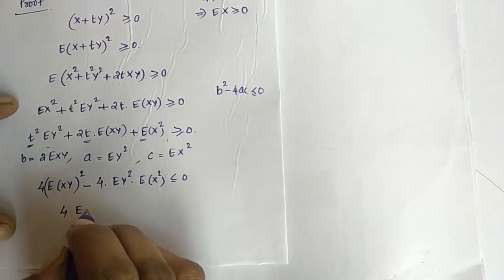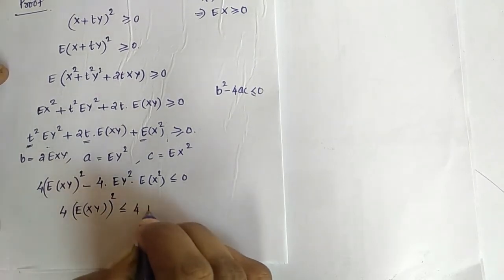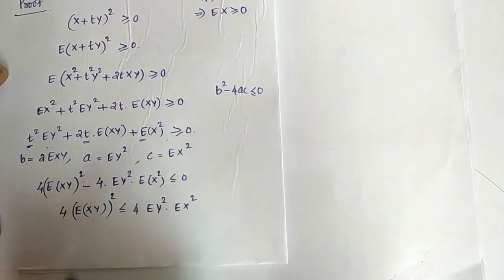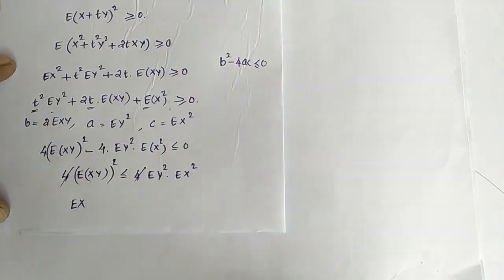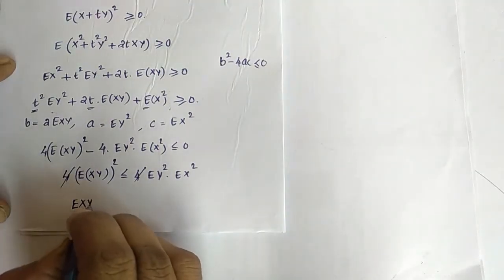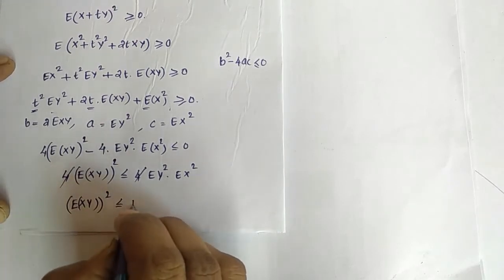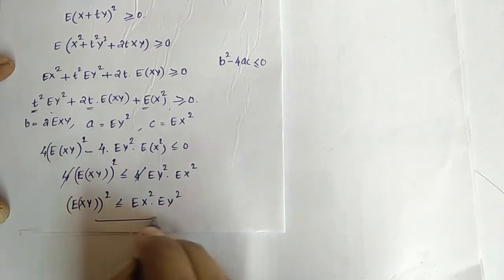That is, 4 into expectation of xy that whole square is less than or equal to 4 into expectation of y square into expectation of x square. We can cancel the 4 on both sides. Then we will obtain: expectation of xy that whole square is less than or equal to expectation of x square into expectation of y square.